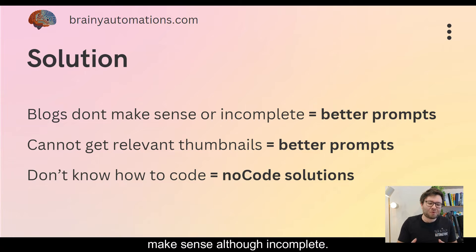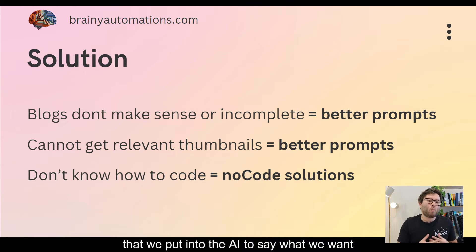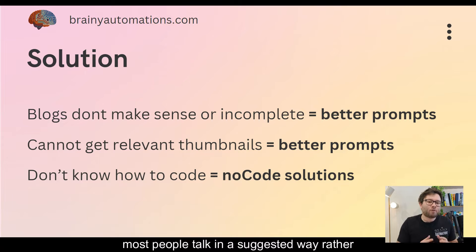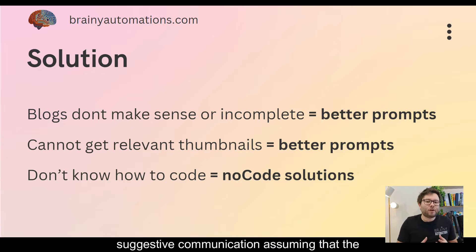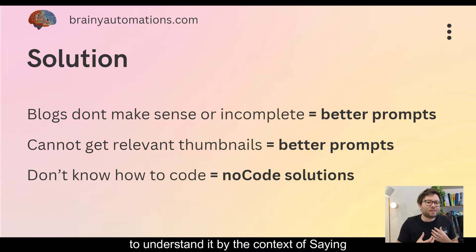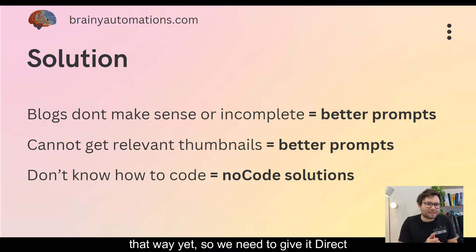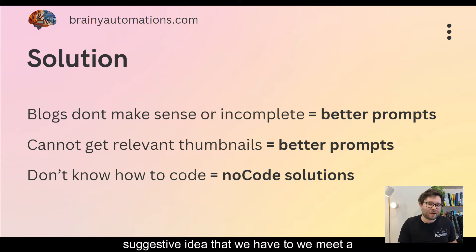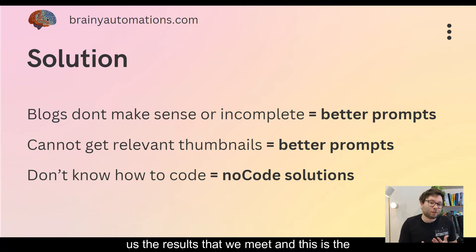So what is the solution? Well, solution one: if the blogs don't make sense or they're incomplete, we need better prompts. The prompt is the thing that we put into the AI to say what we want. The problem is most people talk in a suggestive way rather than a direct way — we speak with tone of voice and suggestive communication, assuming the person receiving that information will understand by context. But AI doesn't work that way yet, so we need to give it direct step-by-step instructions and not assume it's going to understand suggestive ideas.